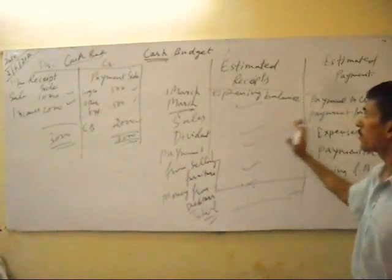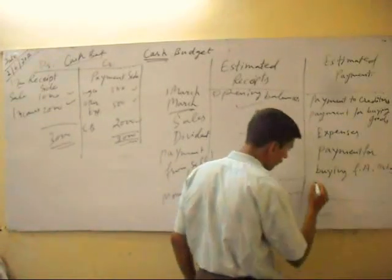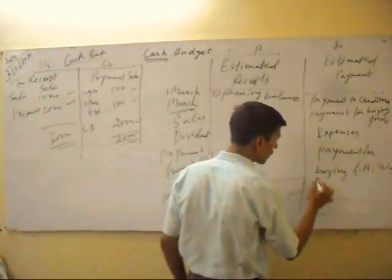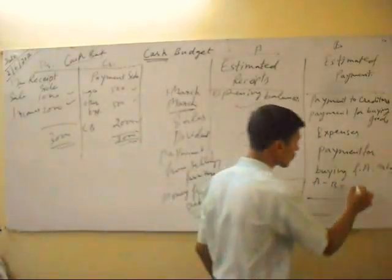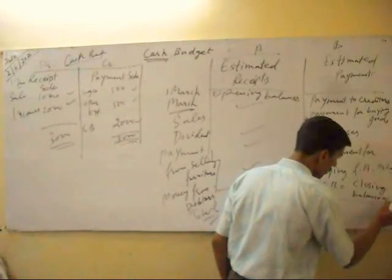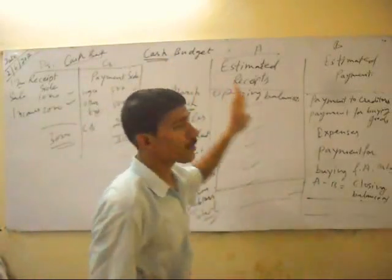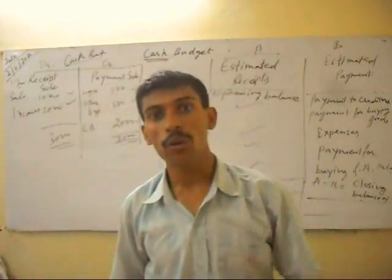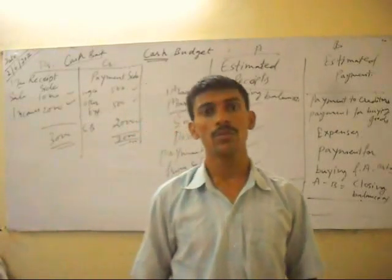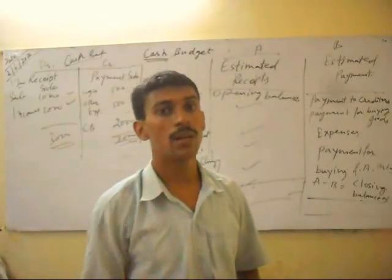Then we take the difference of receipts and payments — A minus B — and this will show the closing balance at the end of March. We can estimate what amount is in our pocket for paying expenses in future. We can make the cash budget on the basis of days, weeks, months, or years.